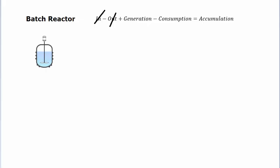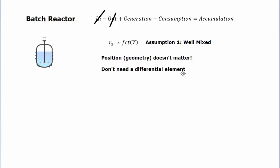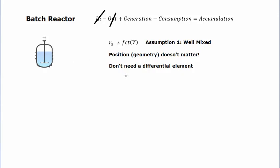The other thing we want to assume is that our vessel is so-called well-mixed. This impeller is doing such a good job at mixing that it's a homogenous mixture all throughout. What this allows us to do is say the reaction rate R is not a function of the volume of the reactor—meaning if I choose any point within this reactor, whether it's here or there, the reaction rate is going to be the same regardless. So the geometry doesn't matter, and we don't need to use a differential element in our analysis.